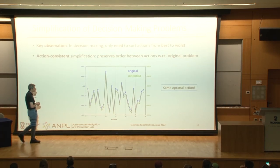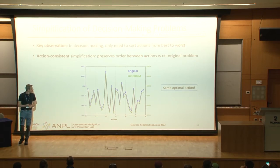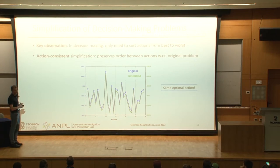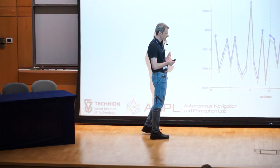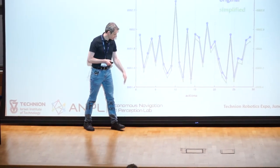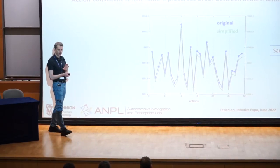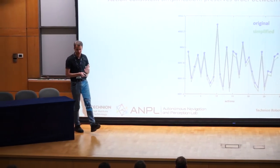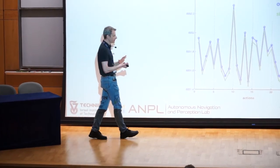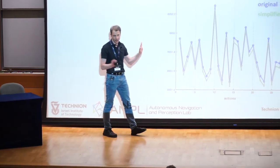This concept started in the lab about eight years ago with a key observation. If we want to make decisions, we can sort actions from best to worst. Look at this graph: the x-axis represents actions — say 30 possible actions — and we want to choose the best one. All we care about is sorting actions; we don't really care about the y-axis values at all. Meaning if we can find a simpler problem that preserves this action ordering, we are guaranteed to have the same optimal action in both cases. We call this an action-consistent simplification.